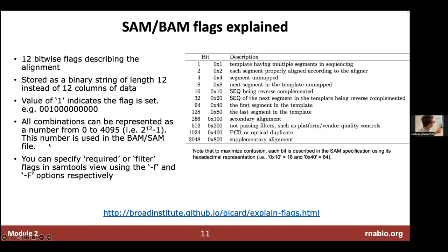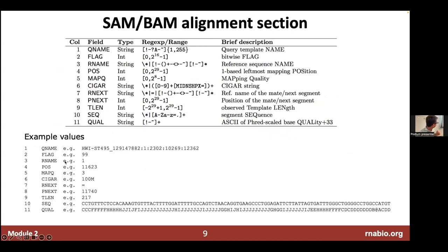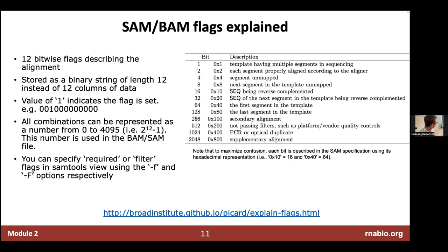There are 2 to the 12 possible combinations — that's 4,096 — so you can represent all of this information: whether it's a duplicate, whether it's a supplementary alignment, with a single number between 0 and 4,096. That's what is in that field of the BAM file. If we go back to one of our examples, this particular flag is 99. There's a handy tool we're going to play around with in the practical where you can go to this website, enter the number 99, and it'll tell you which of those properties that particular alignment has — it'll go through the permutations and say yes to this, no to that, and so forth.